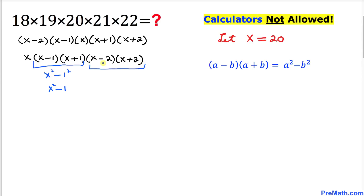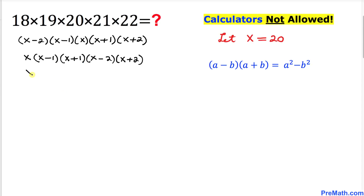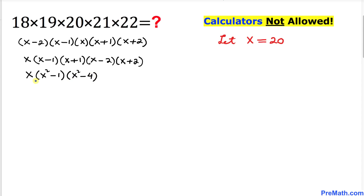Likewise, let's focus on the two factors x minus 2 times x plus 2. We are going to use the difference of squares formula once again, so this can be written as x squared minus 4. Therefore we can write the whole expression as x times (x squared minus 1) times (x squared minus 4).